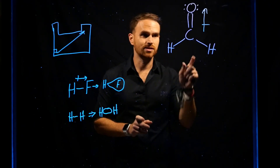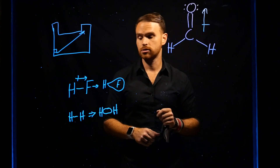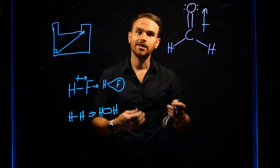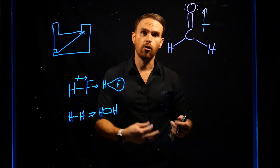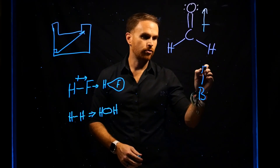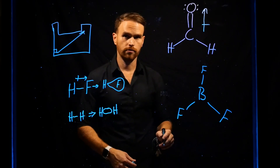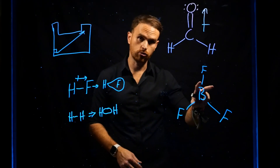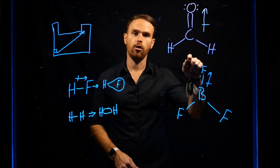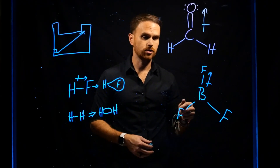Having a polar covalent bond doesn't always mean you're going to have a polar molecule. Consider BF3, which is also trigonal planar. We have a trigonal planar molecule with polar covalent bonds between boron and fluorine, just like we have a trigonal planar molecule with a polar covalent bond pulled towards oxygen in formaldehyde.